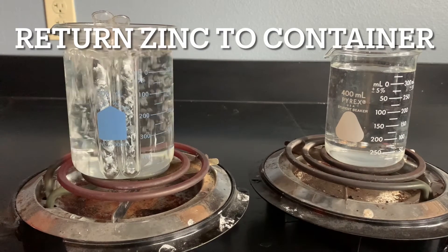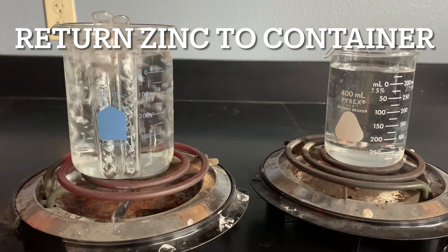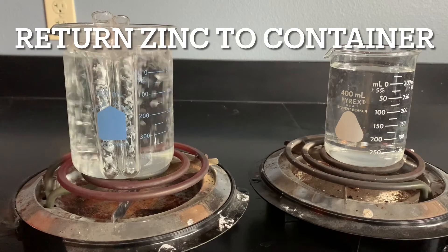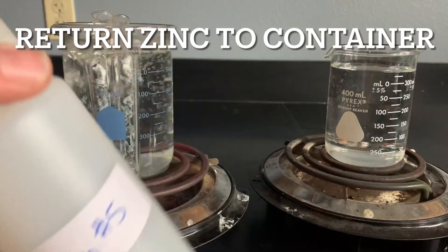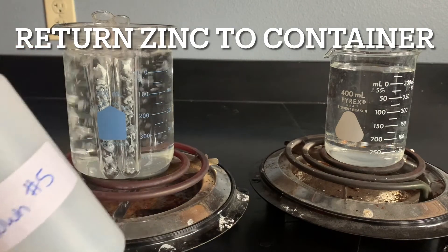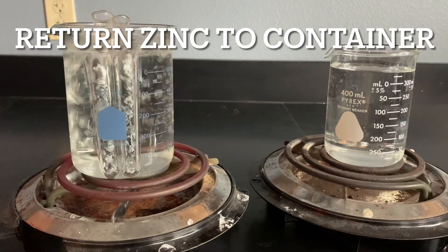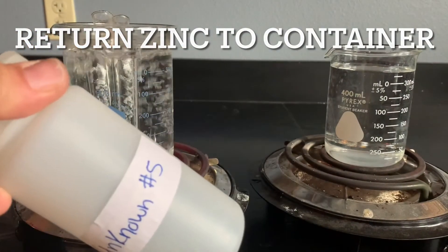Now please note when you get done with the zinc at the end, you're not going to discard it in the fume hood. You are actually going to dry it and put it back in the original container. So you don't discard your zinc at the end. You're going to place it back dried into the container.